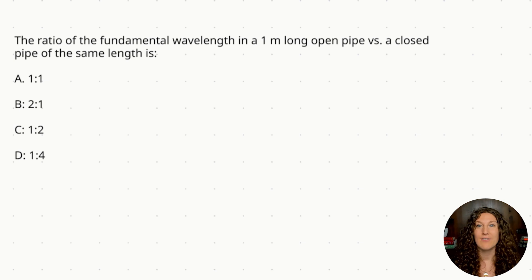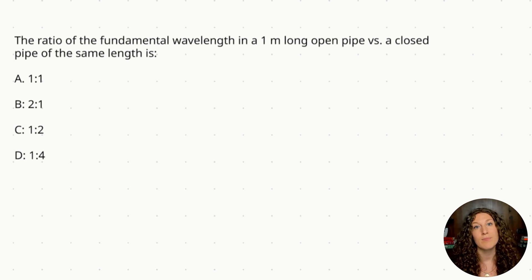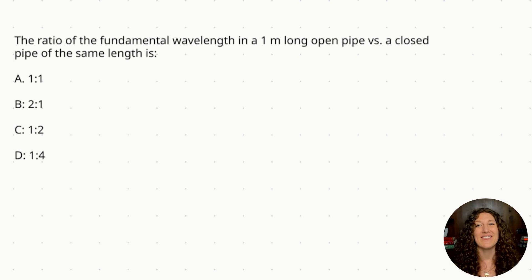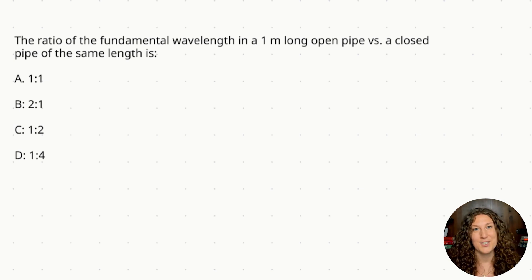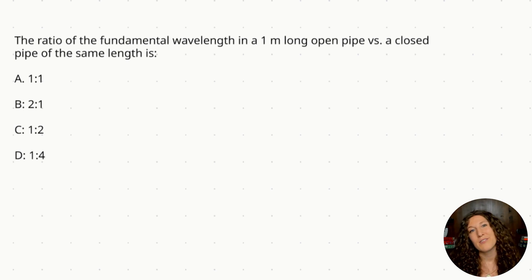The setup of this question is we have two pipes, one open and one closed. They're both one meter long, and we're asked about the ratio of the fundamental wavelength between these two pipes. What is the wavelength in the open pipe at the fundamental frequency, and what is the wavelength in the closed pipe at the fundamental frequency? Then we'll take those two numbers and put them in a ratio. We need to identify the equations that describe the relationship between the wavelength of the sound wave and the length of the pipe.